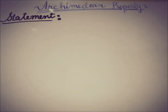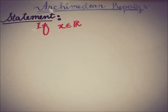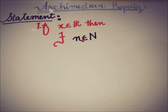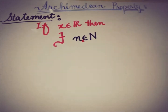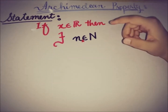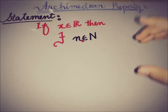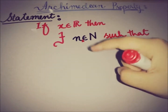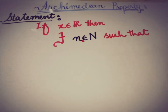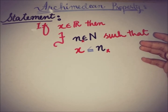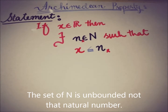The Archimedean property states that if we take an element x from the real number line R, then there exists a natural number n corresponding to that real number x, such that x is always less than or equal to that corresponding natural number n. So the Archimedean property tells us that the natural numbers are not bounded in R. This is the statement we are going to prove.